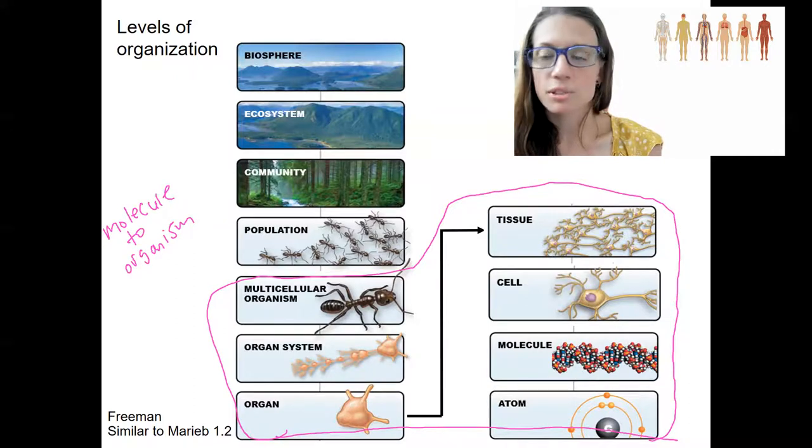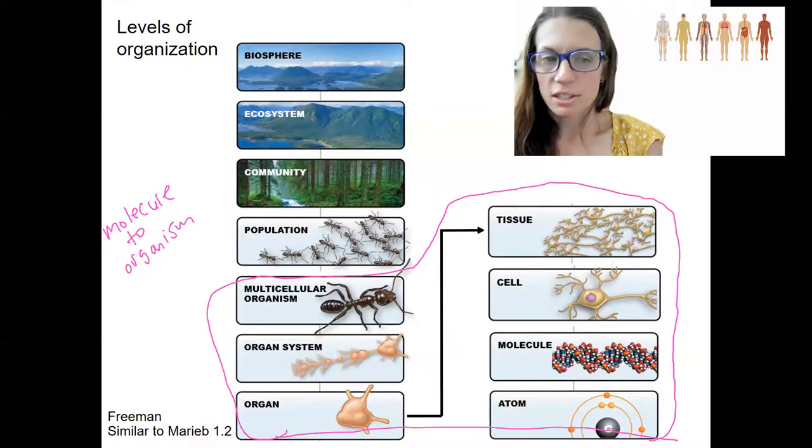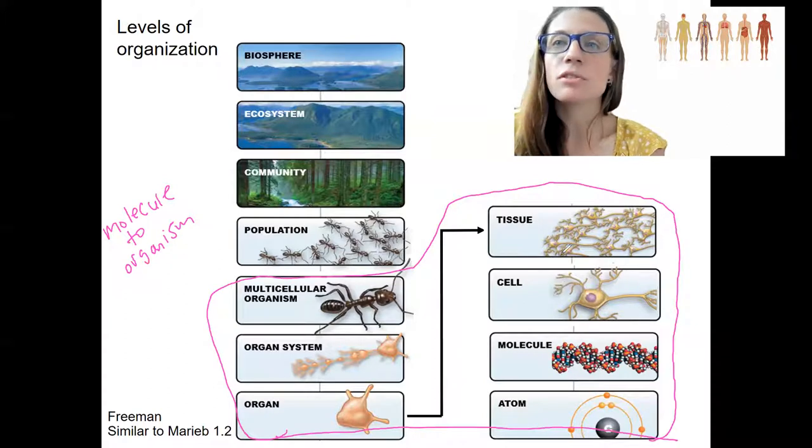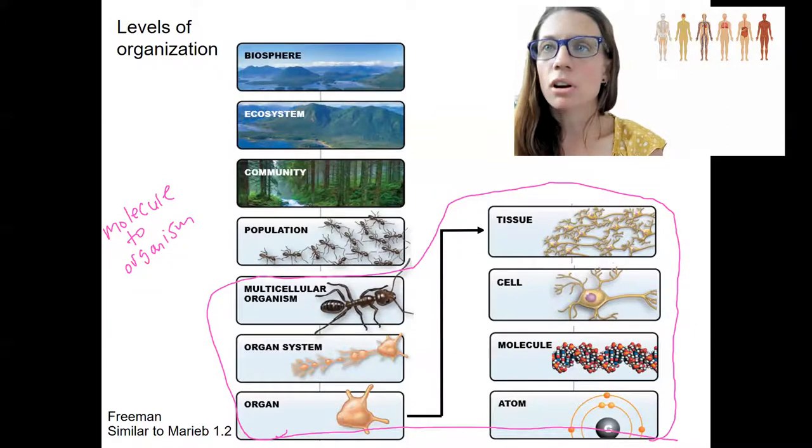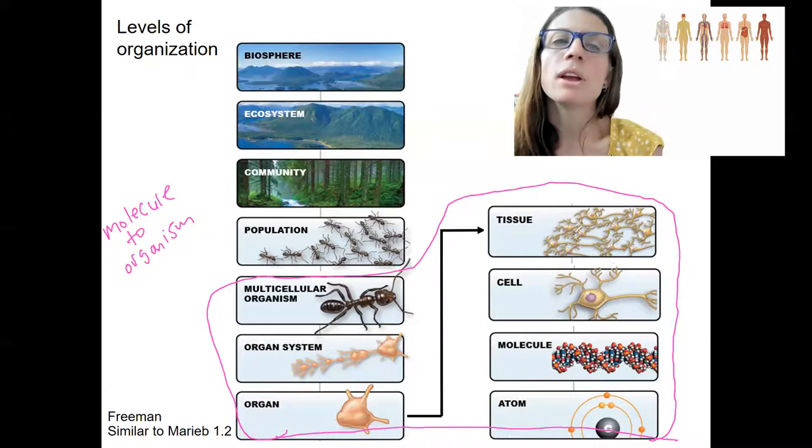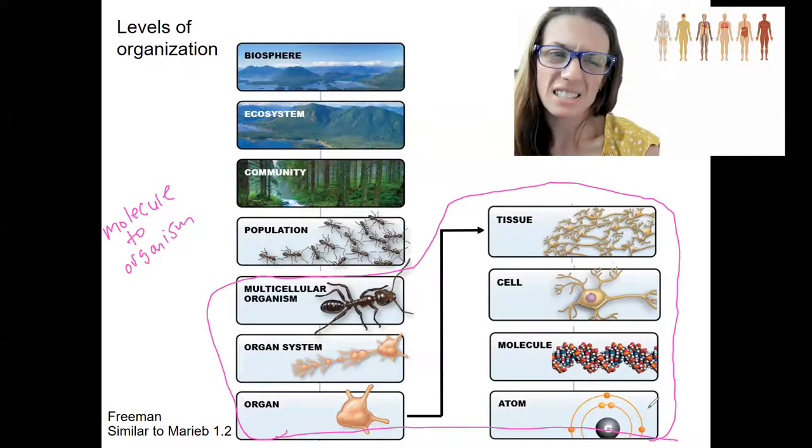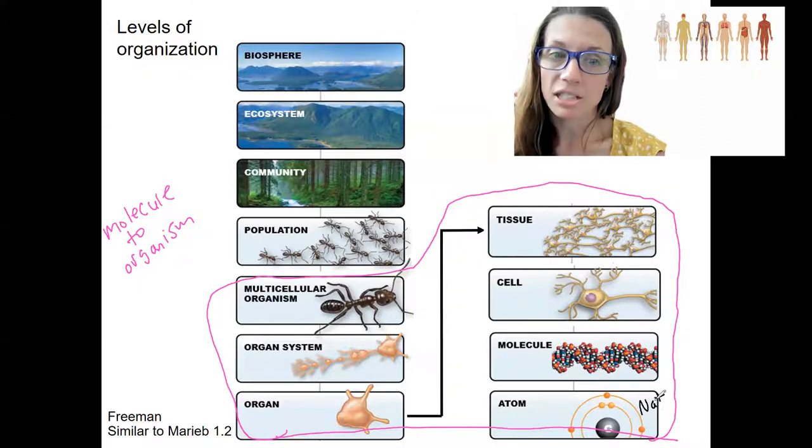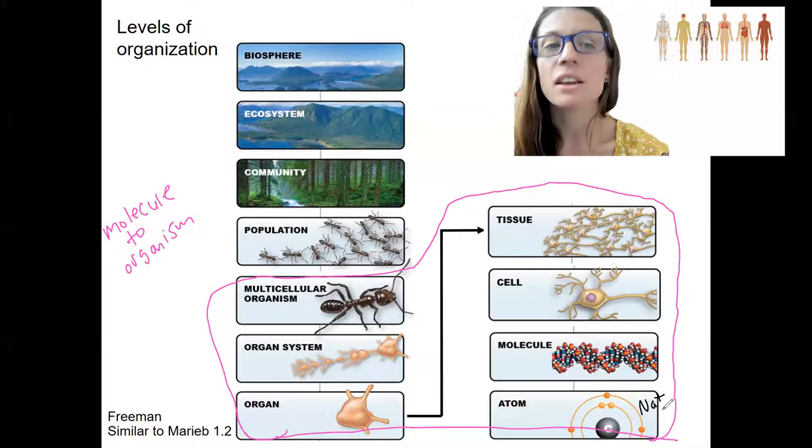So let's go through these levels. First, we've got atoms. Atoms are going to combine to form molecules. Atoms are reviewed in Chapter 2. I'm not going to talk about them much more besides when we see them. So we'll see things like Na plus, a positively charged sodium ion. That's an example of an atom.